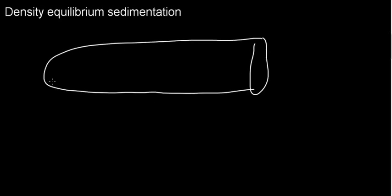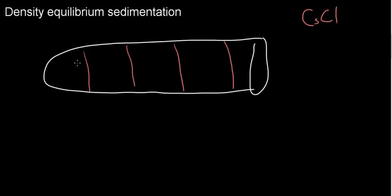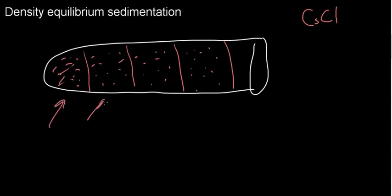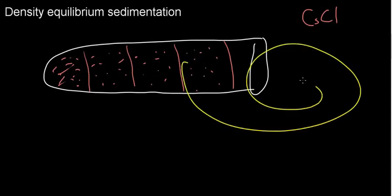So, density equilibrium sedimentation — we've drawn this vial many times. Now, some elements like cesium chloride can be present in this vial through some process in different density gradients. What I mean by different density gradients is that I can build layers here where maybe this layer is very, very dense cesium chloride, this one slightly less dense, this one not very dense, and this one the least dense of all. We're going to place particles in the solution and let them sediment under centrifugal force.